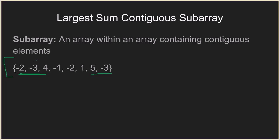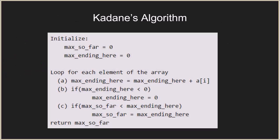As you can see, the largest sum contiguous subarray for this given array is the highlighted portion: four, minus one, minus two, one, and five. Four minus one minus two becomes one, and then one plus five becomes six, so total seven. The maximum sum of a contiguous subarray is seven, corresponding to the subarray four, minus one, minus two, one, and five. We now have to find this programmatically.